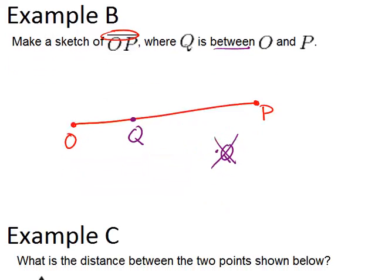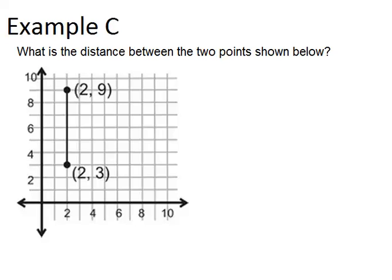All right, and let's look at the last example. What is the distance between the two points shown below? So we have it labeled that this is the point (2, 3), and this is the point (2, 9). So this is a vertical line.